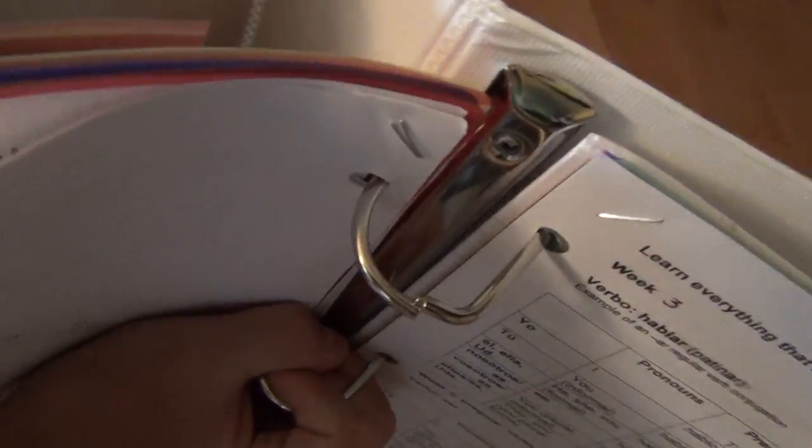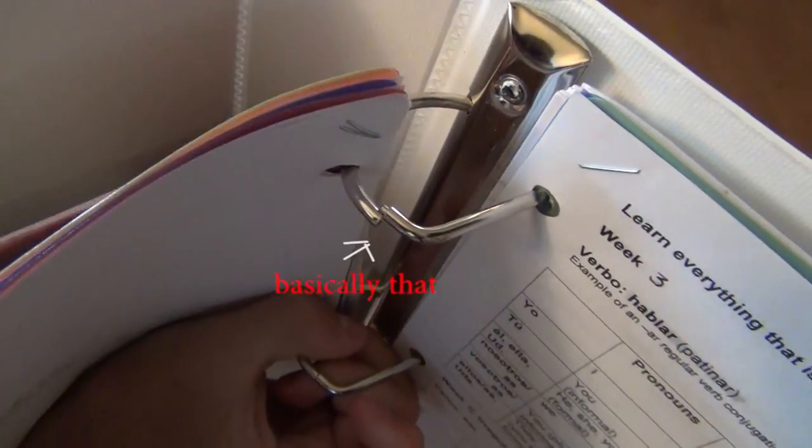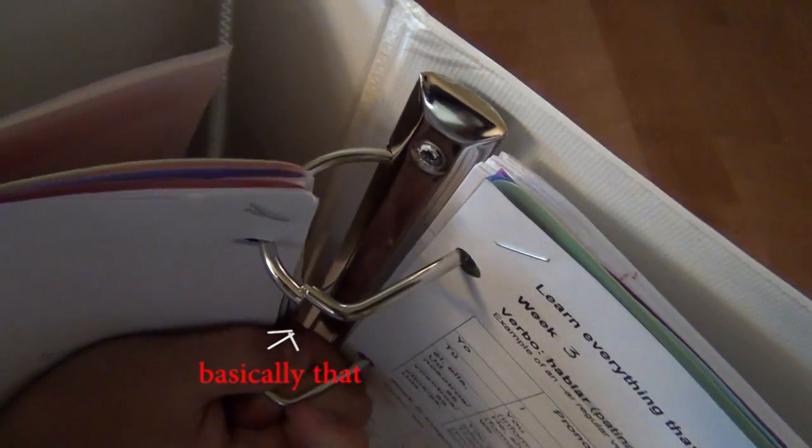Binders are really annoying to use, especially when the teachers don't hole punch their papers first. But the worst thing that can happen is this. When the binder tabs get uneven and the rings are not together.